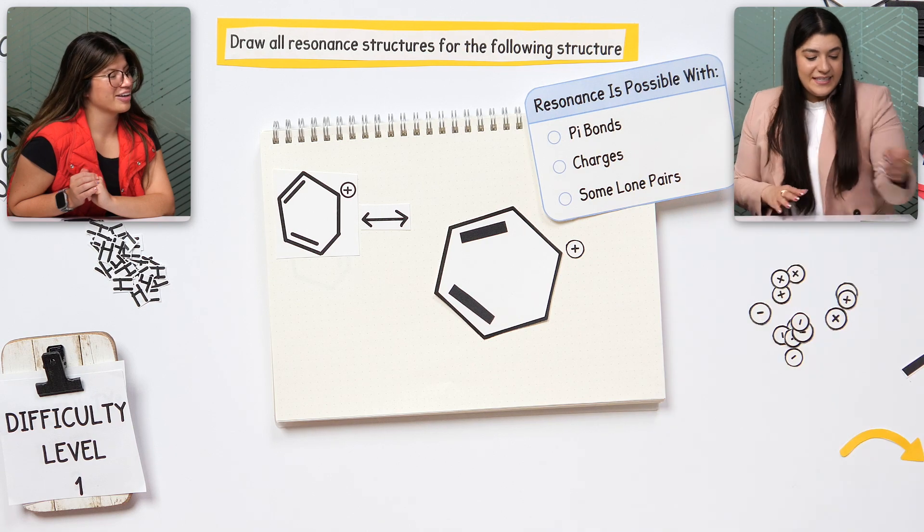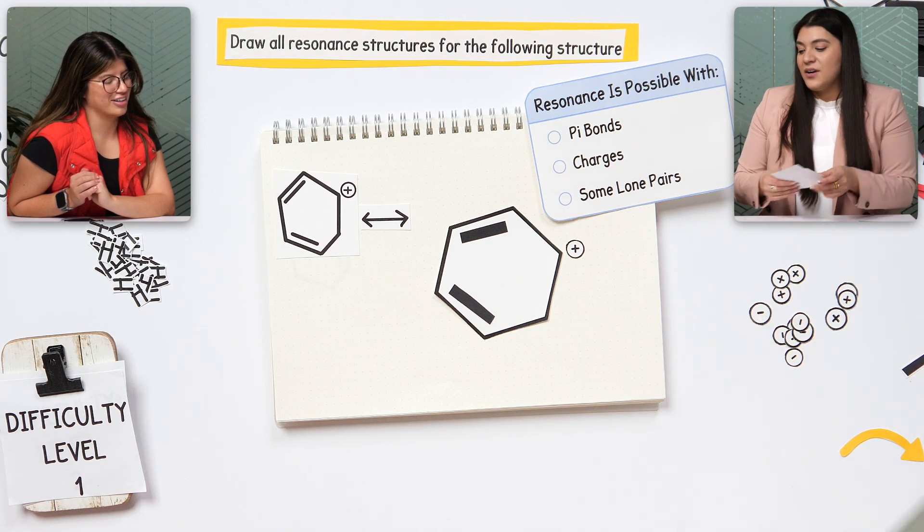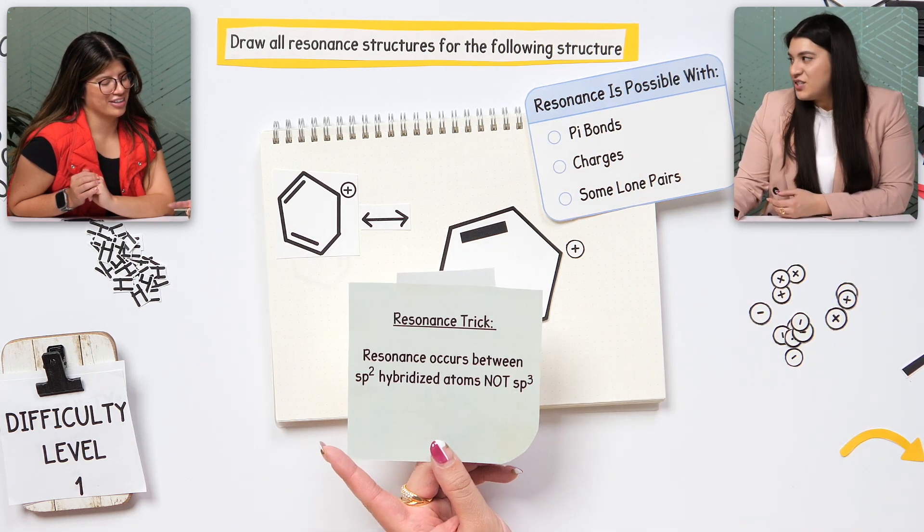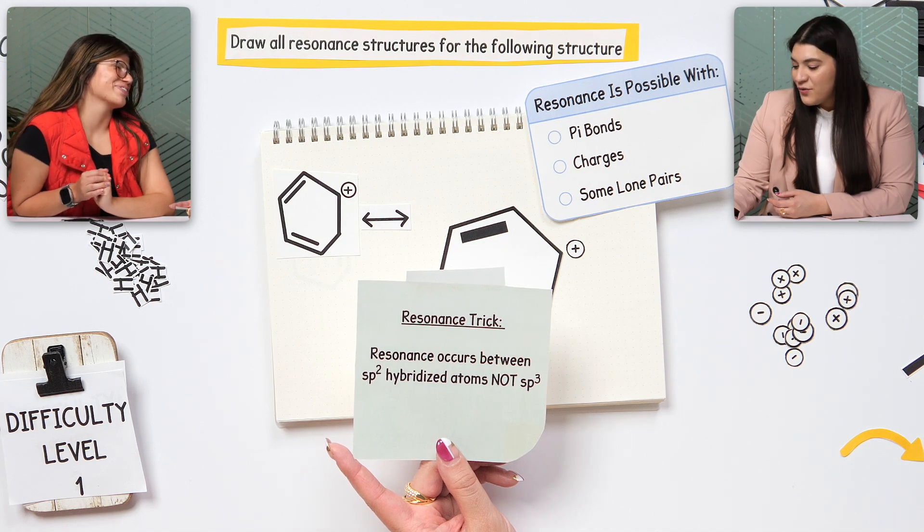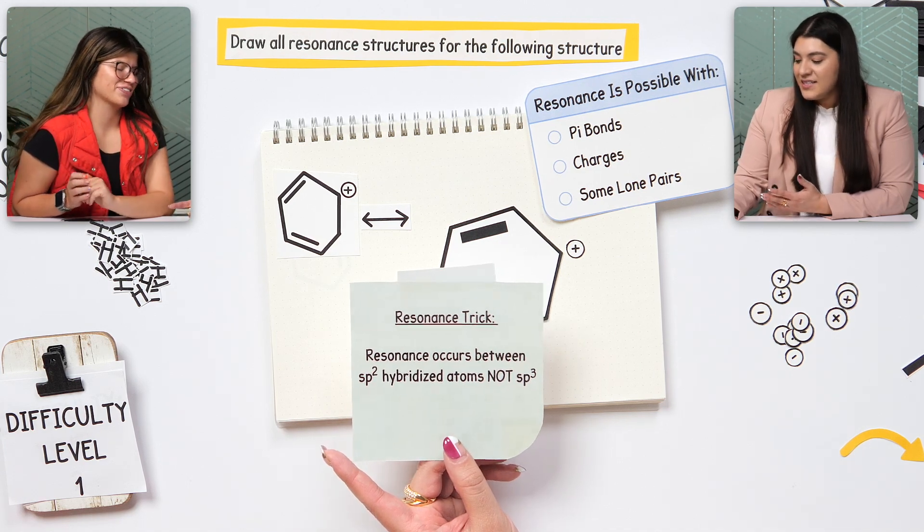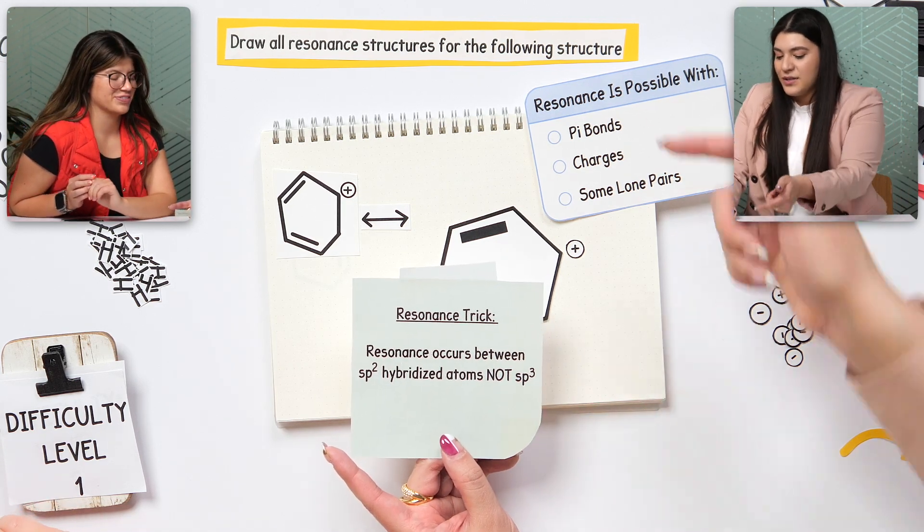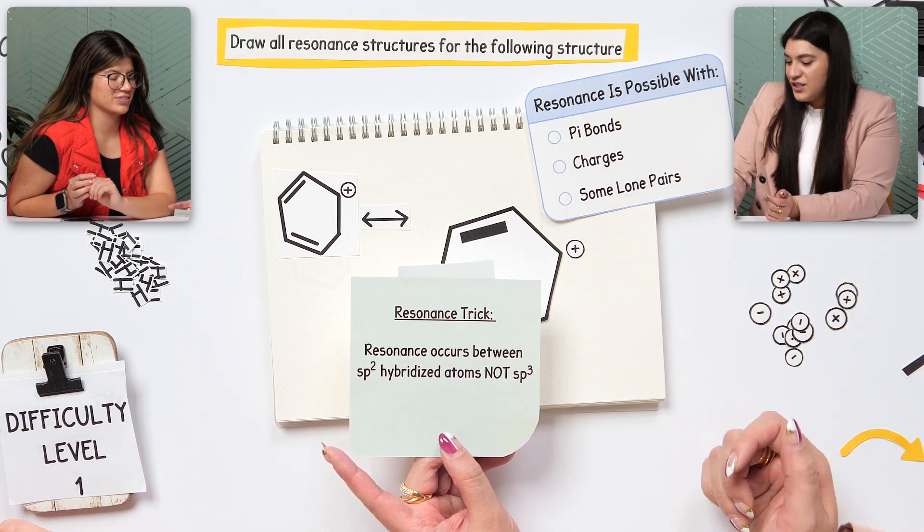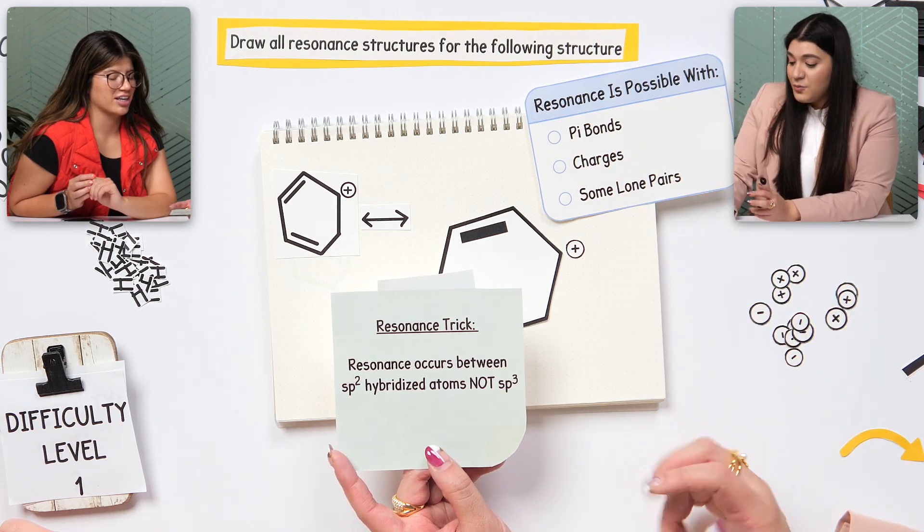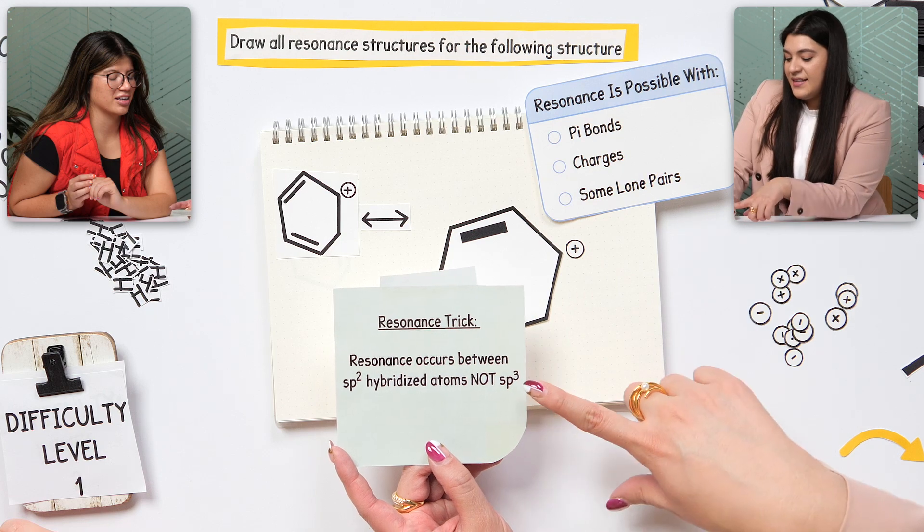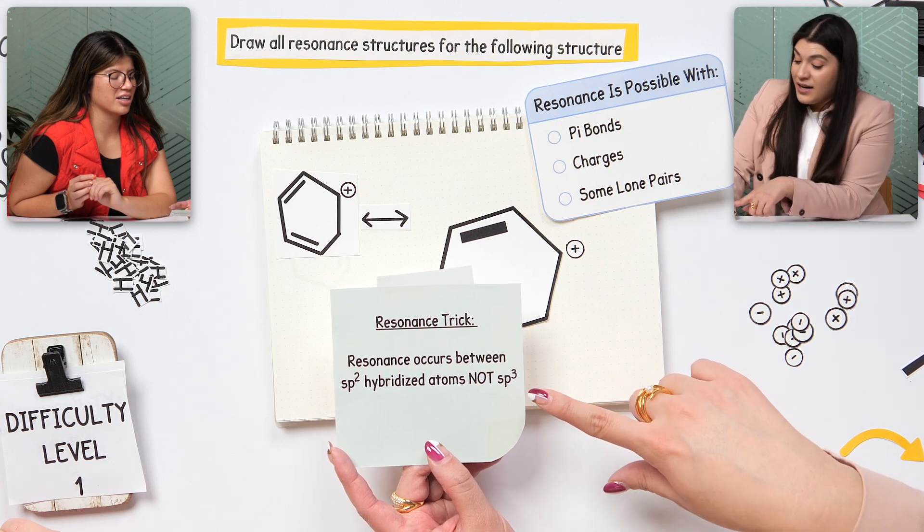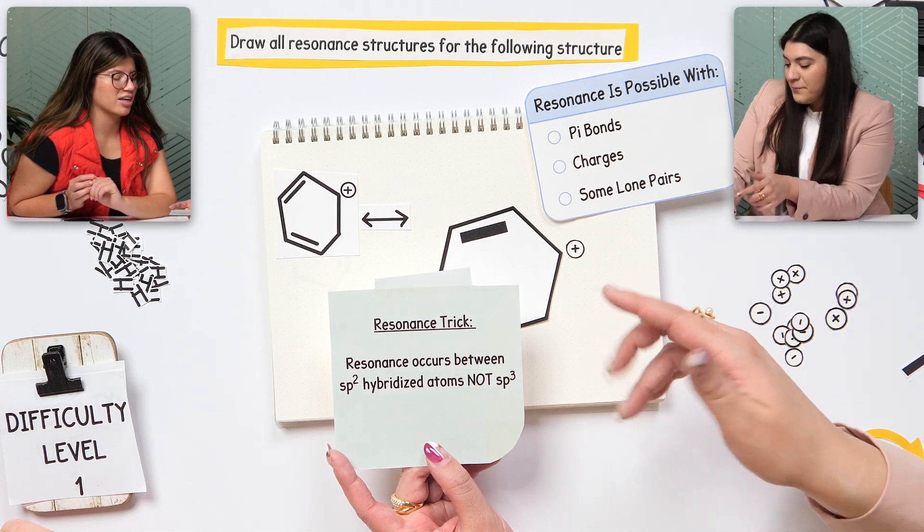The main thing with the trick is we're later going to see that maybe there might be an oxygen that isn't going to be perfectly, you know. Sometimes I would say that this trick mainly works with the pi bonds and then the positive charges. But we really aren't going to see anything with an sp3 hybridized carbon.